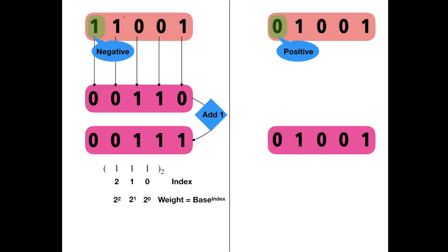Next, we multiply the bit with the corresponding weight, and then we add these terms to finally get the magnitude. So the magnitude is 4 plus 2 plus 1, which is 7. So the final answer for the left part is negative 7.